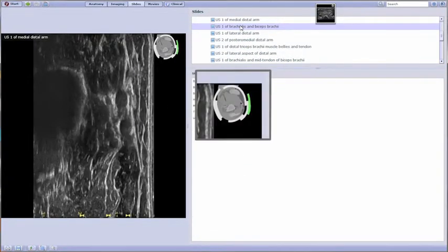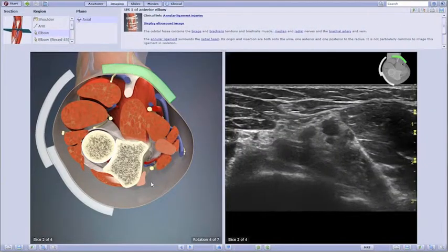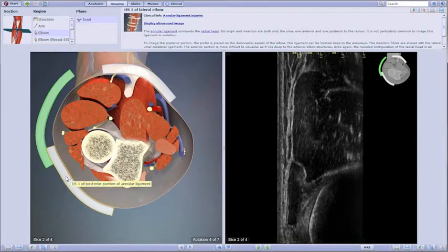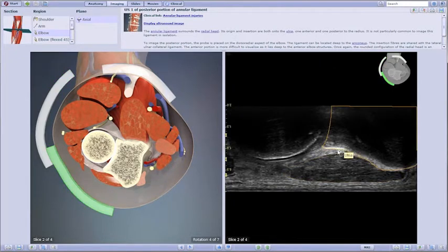transducer positions are clearly shown on the anatomy cross sections. These can be selected to show the corresponding ultrasound scans, which are also interactive.